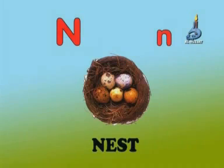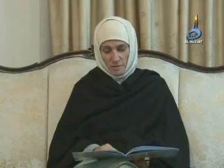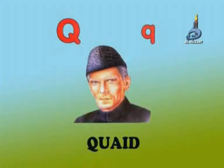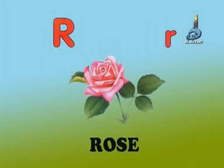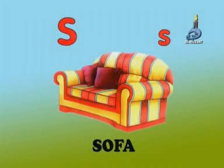M for Melon. It's not Melon — it is Melon. N for Nest. O for Orange. Again, it's not Orange — it is Orange. P for Peacock. Q for Qaid. R for Rose. S for Sofa.